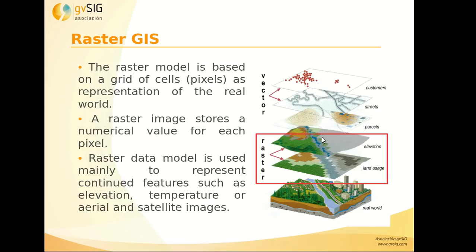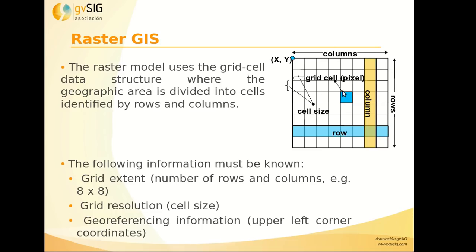Regarding raster GIS, the raster model is based on a grid of cells — the pixels. Each pixel has a numerical value representing the information, for example the elevation, temperature, or in an aerial orthophoto the color. Each image has a number of columns and rows, and the resolution is determined by the cell size. If we have an image with a large cell size, the elements won't be seen correctly.